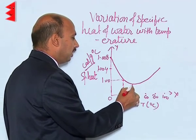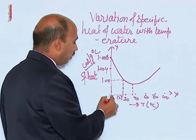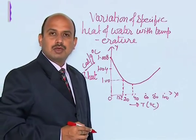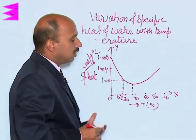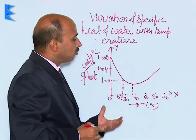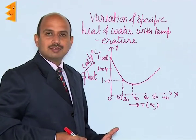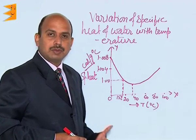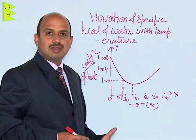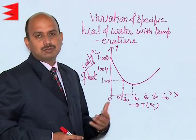Around this temperature, specific heat is at its minimum, and around 0 degrees, the specific heat is at its maximum. So, water shows a peculiar behavior because of the variation of specific heat with temperature. Water has a large specific heat, and because of that it can be used for cooling purposes, because it takes a large amount of heat to increase or decrease the temperature by a small amount.